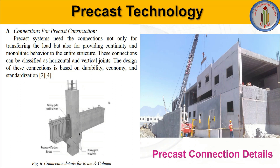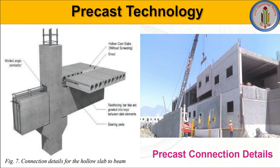Next, let's look into connection details for precast construction. In the conventional system, all elements are constructed at site so load transfer is naturally proper. But in the precast system, we need to provide proper connections not only to transfer the load but also to ensure continuity and monolithic behavior of the entire structure. These connections can be classified as horizontal and vertical joints, and their design is based on durability, economy, and standardization. For beam-and-column connections, pre-stressed tendons, welding plates, and bearing pads on concrete are used. For hollow slab-to-beam connections, reinforcing bar ties are grouted into keys between slab elements, and bearing pads are also provided.